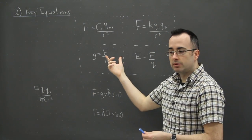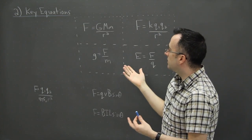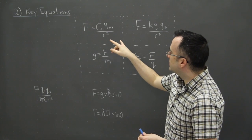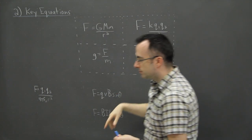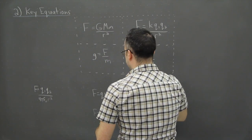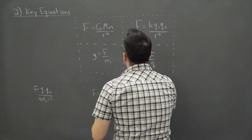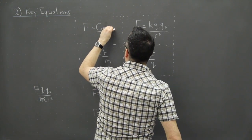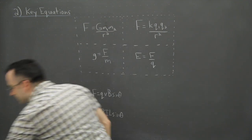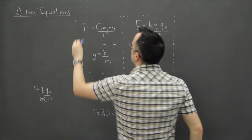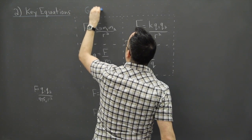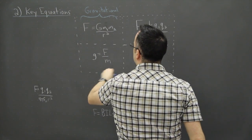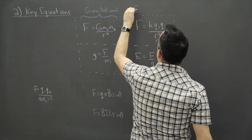When they had the older syllabus it was actually a lot more disorganized. This new one is put together quite beautifully, and the reason is: we have F = Gm₁m₂/r² on the left. This first column here is for gravitational — all this stuff represents gravitational — and the stuff over here is electric.